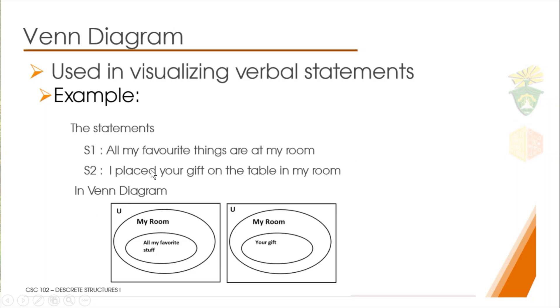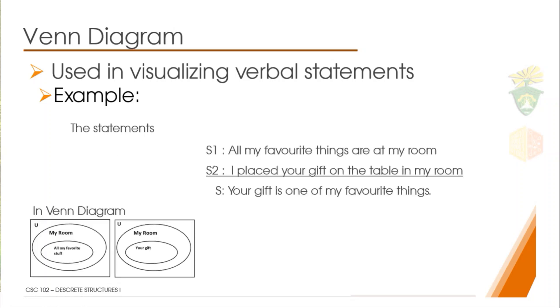We have here a Venn diagram representation of these two statements. We see here that all my favorite elements, or all the favorite things, are at my room, so all the favorite stuff that I have is in my room. Also in statement number two, it is said that the gift that you gave me I put in my room, so your gift is also inside my room. What do you think could be the conclusion from reading this Venn diagram here?